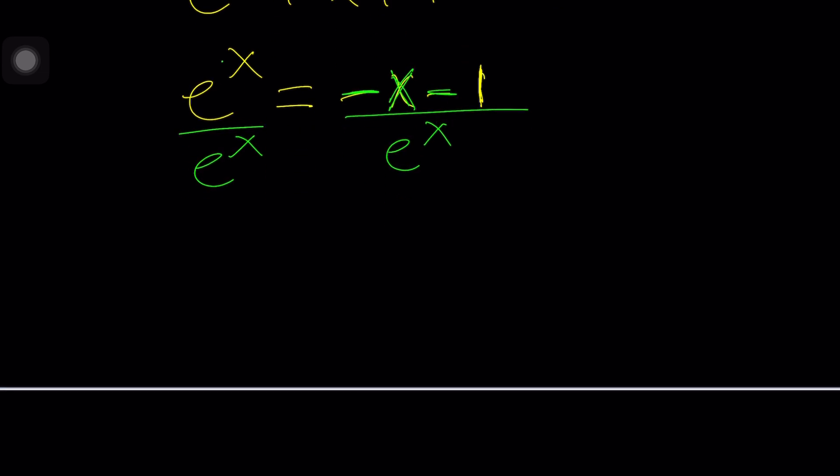We can now write this as negative X minus 1 times E to the power negative X. And this becomes 1, which is nice. So we have a constant on one side, which is super duper nice, and something like this on the left-hand side. Now, what do you do with this?